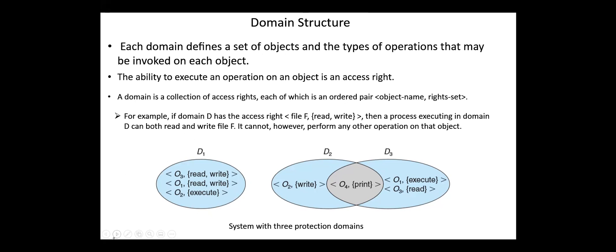Domain structure. Each domain defines a set of objects and the types of operations that may be invoked on each object. The ability to execute an operation on an object is an access right. A domain is a collection of access rights, each of which is an ordered pair: object name, rights set.